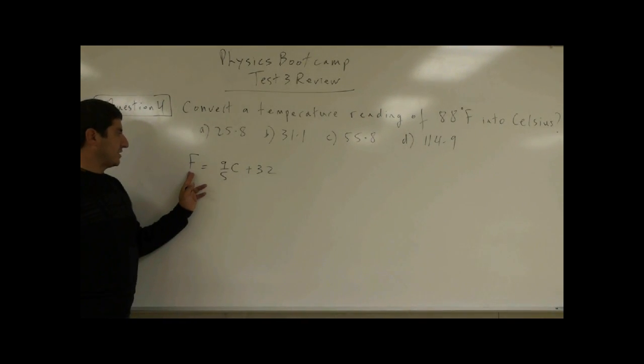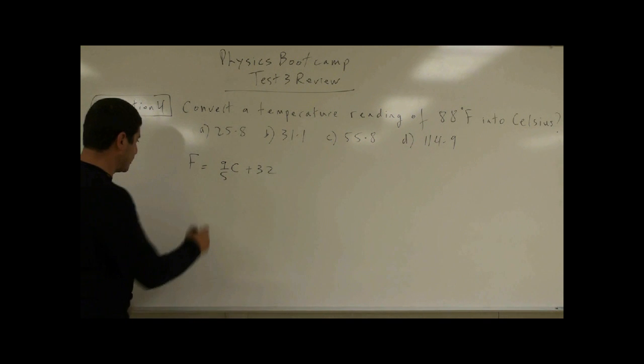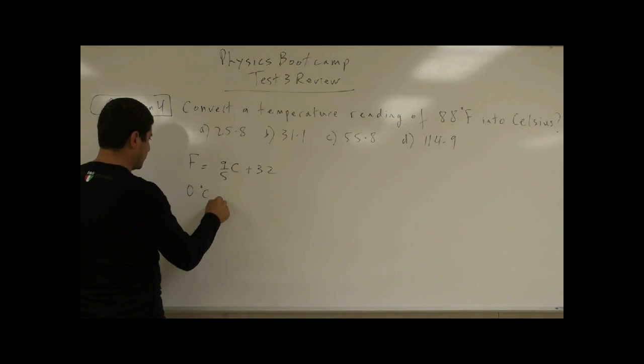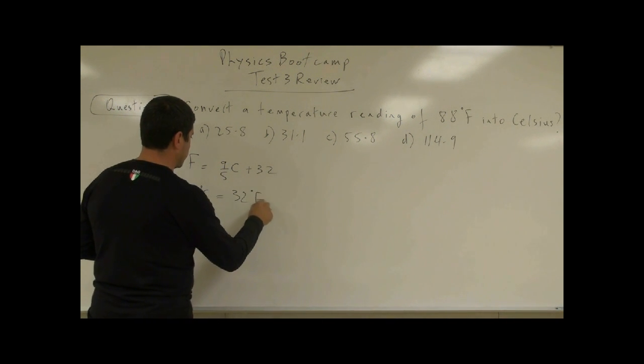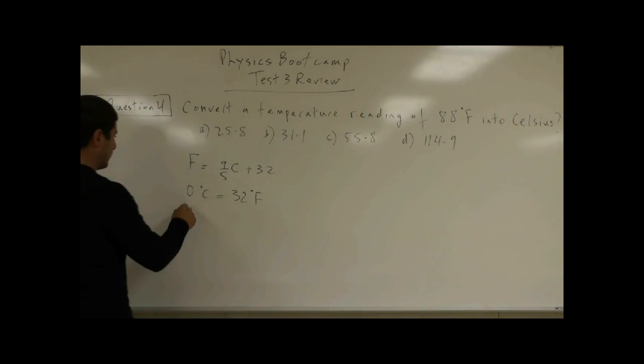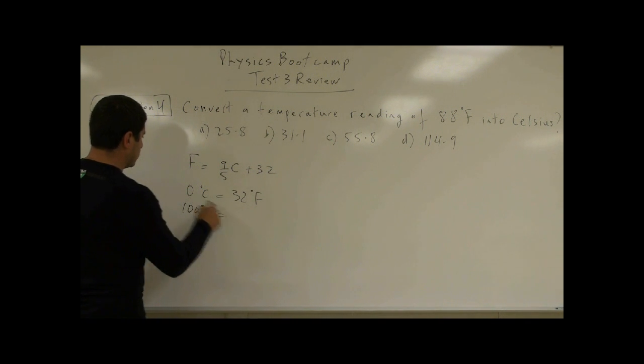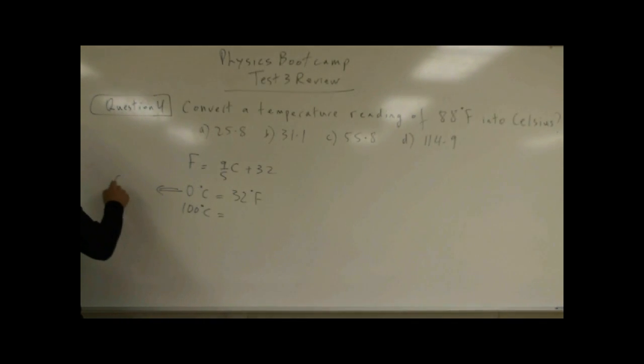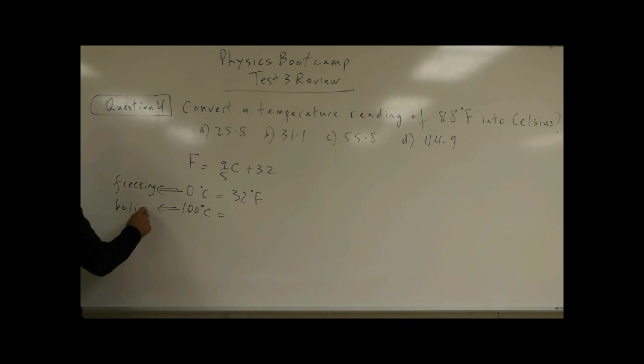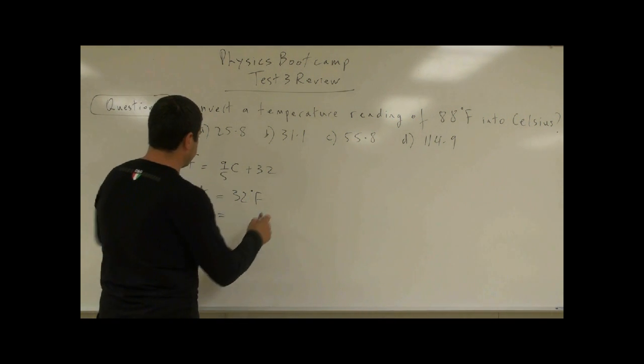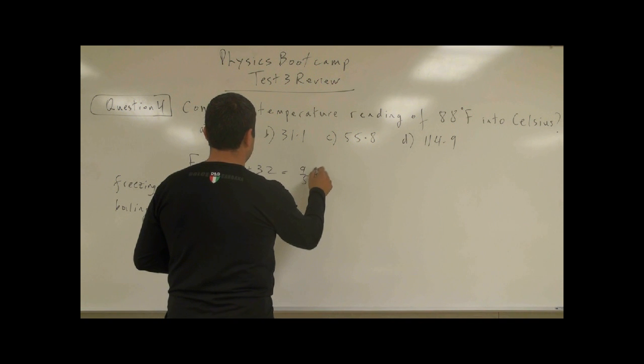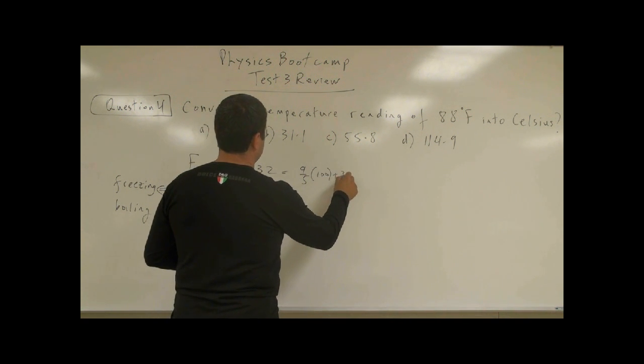So the Fahrenheit degree is such that when you have 0 degrees Celsius, that's corresponding to how much Fahrenheit? 32 degrees Fahrenheit. When you have 100 degrees Celsius, this is the freezing point of water. And then this is the boiling point. The boiling point would equal what? Well, 9/5 of 100, so what's that going to be? 9/5, 100, plus 32.